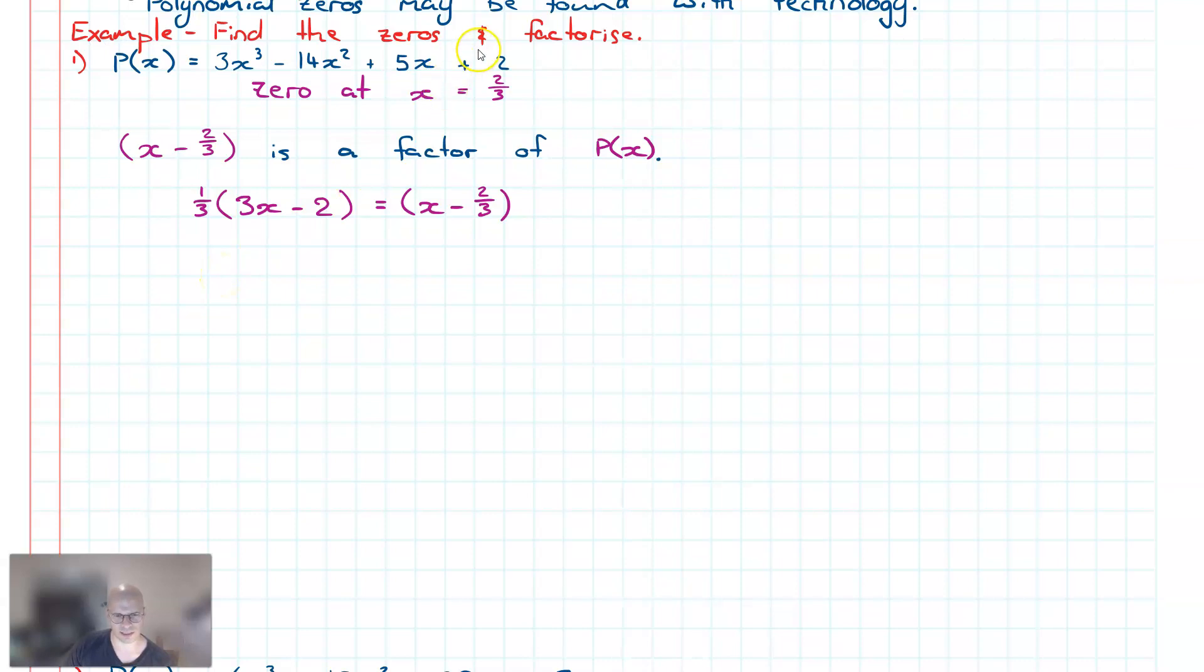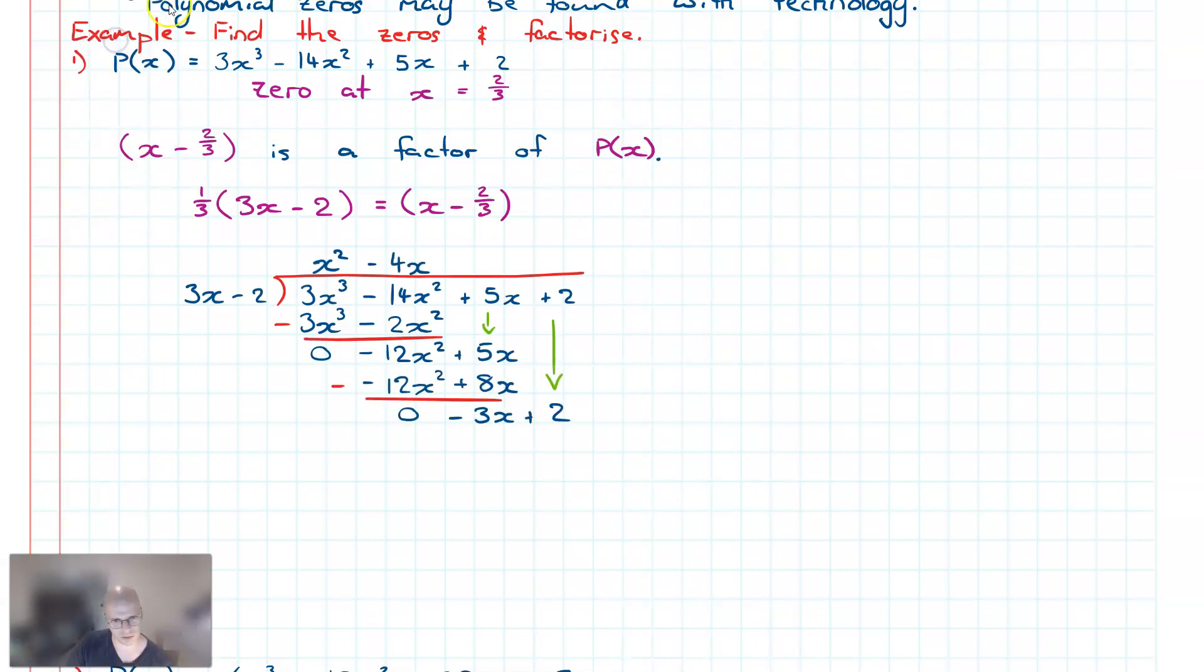So to find the exact zeros for this one and factorize, I will use algebraic long division because I think it will be a little bit easier based on this guy over here. So let's have a go. (3x - 2) into (3x³ - 14x² + 5x + 2). X squared... then we got negative one up there. So what we find is that P(x) is equal to at least 1/3 times (3x - 2) multiplied by (x² - 4x - 1).